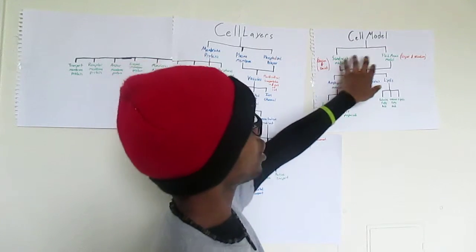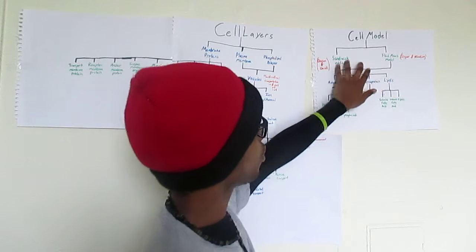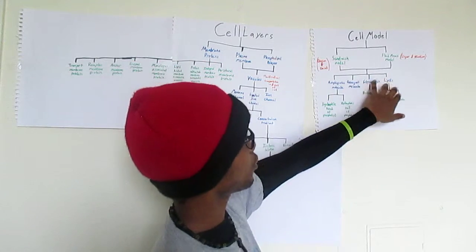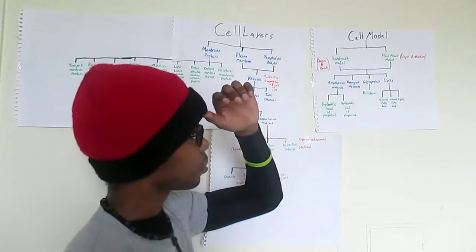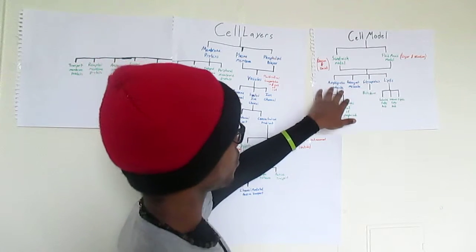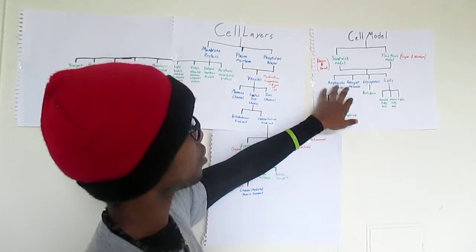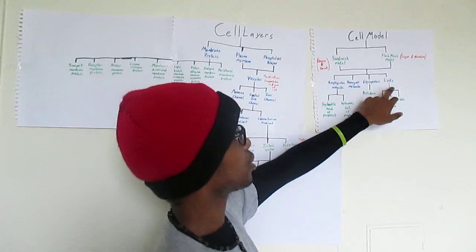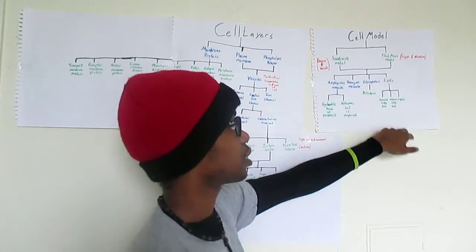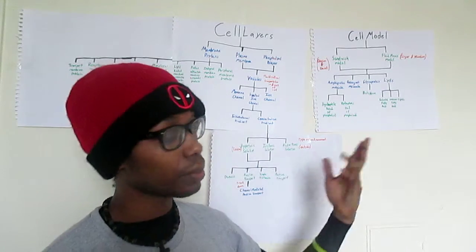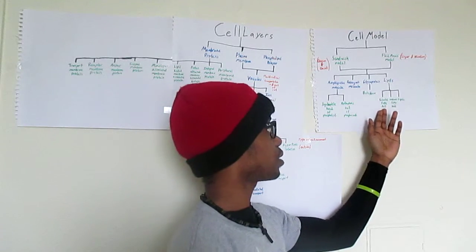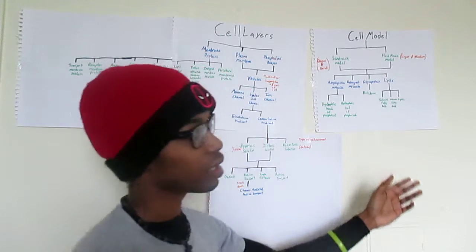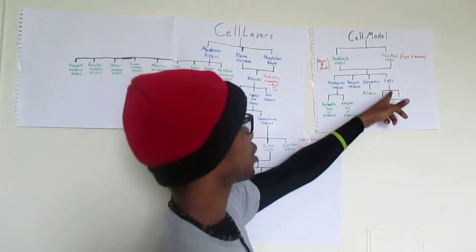Now within these two models, they break down into four molecules: the amphipathic molecule, the detergent molecule, the glycoprotein, and the lipids. The lipids break down into the saturated fatty acids, the unsaturated fatty acids, and the lipids.